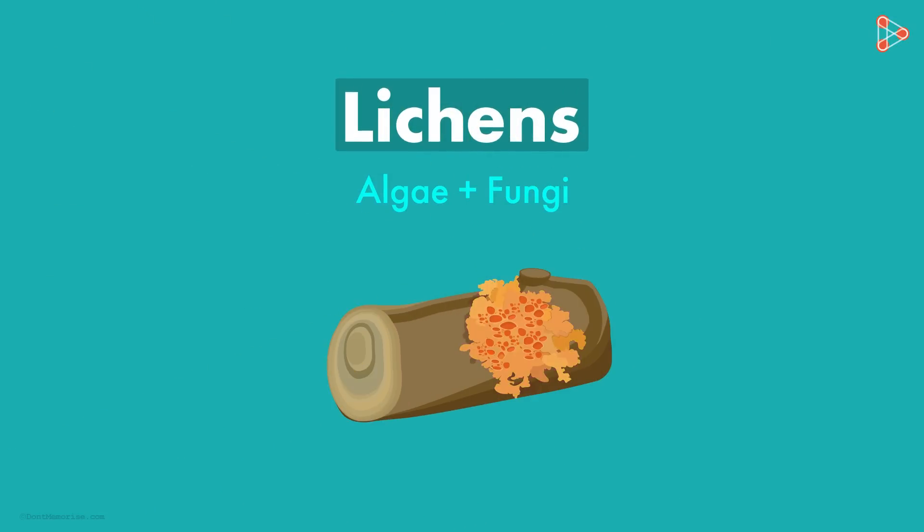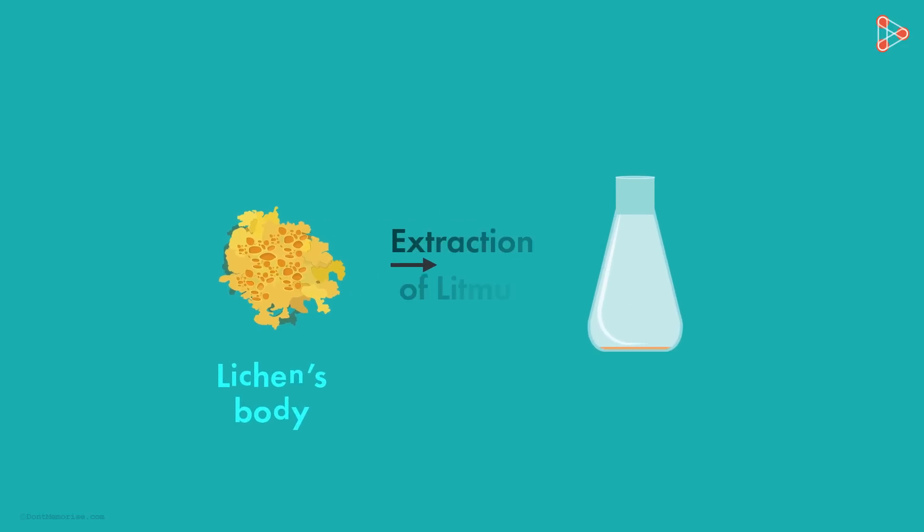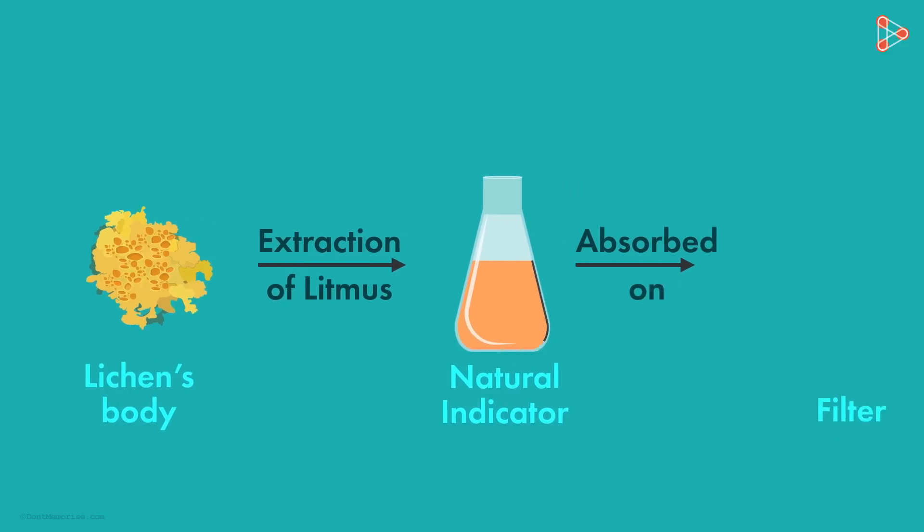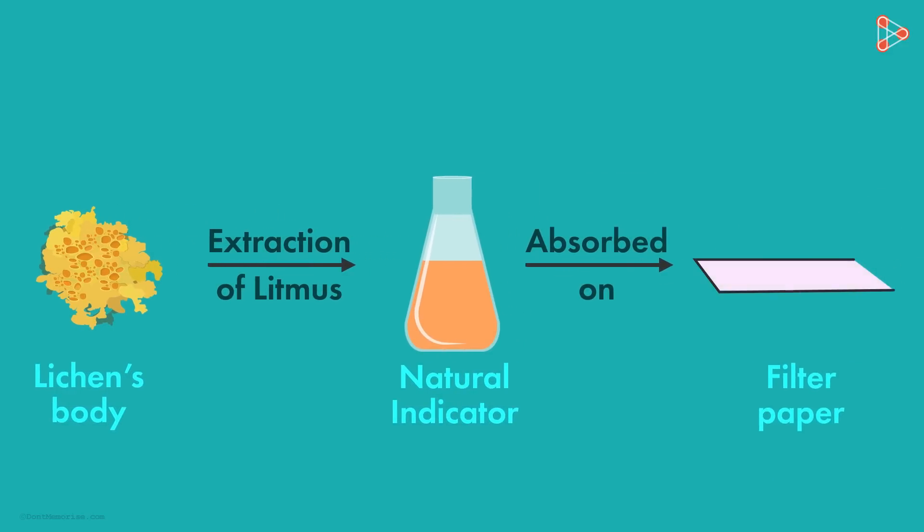As a result, chemical changes in the body of lichens can give us indications of the nature of substances that come in contact with them. So a substance extracted from a lichens body called litmus is used as a natural indicator for chemical purposes, especially in detecting the acidic and basic nature of solutions. The litmus obtained from a lichens body is a mixture of some dyes that are usually absorbed on a filter paper. This paper made with litmus on it is used as an indicator for detecting acids and bases.